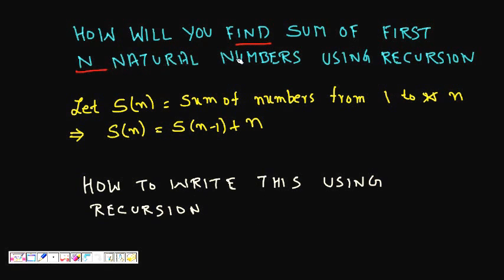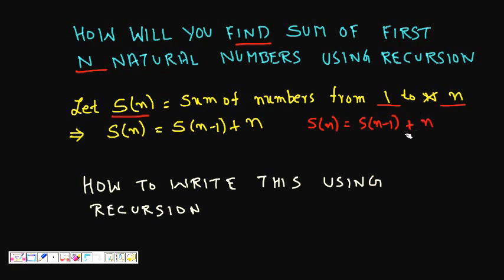How will you find the sum of first n natural numbers using recursion? In mathematics, let S(n) be the sum of first n natural numbers, i.e., the sum from 1 to n. S(n) can be written as S(n-1) plus n.